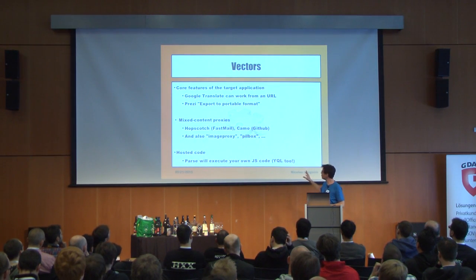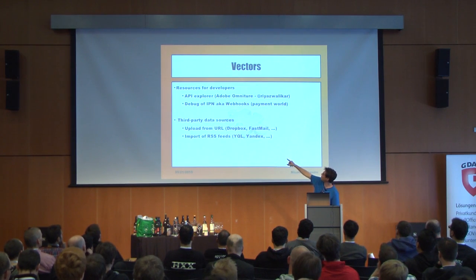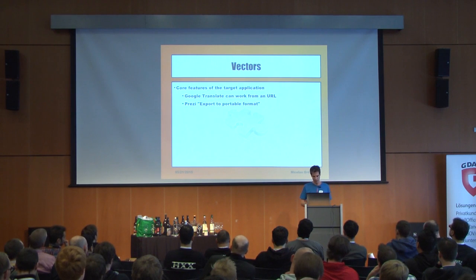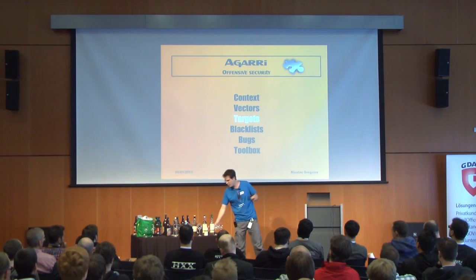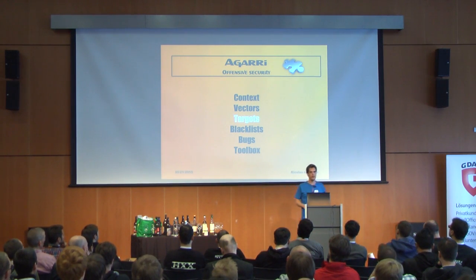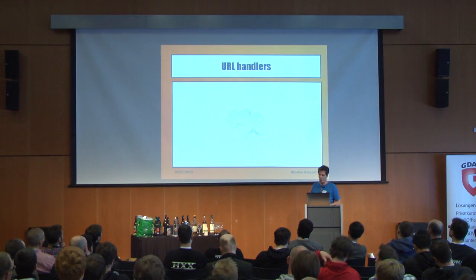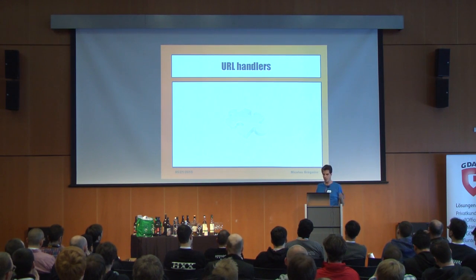We are looking for this kind of features — plus everything application-specific. With mixed content proxies, third-party data sources, developer resources, and third-party authentication, you have this kind of stuff everywhere, so we already have a lot of attack surface to check. We have input fields where we can enter a URL. The question is: what kind of URL do you want to enter? We have the left part — the URL handler — and the right part — the domain name or IP address.